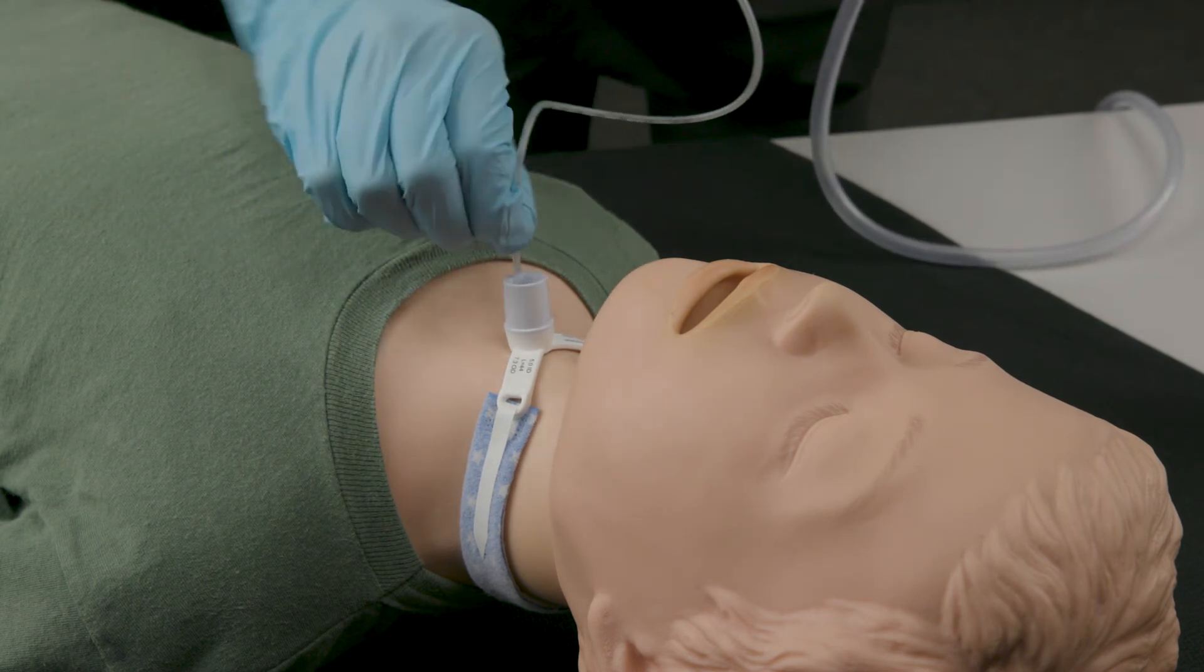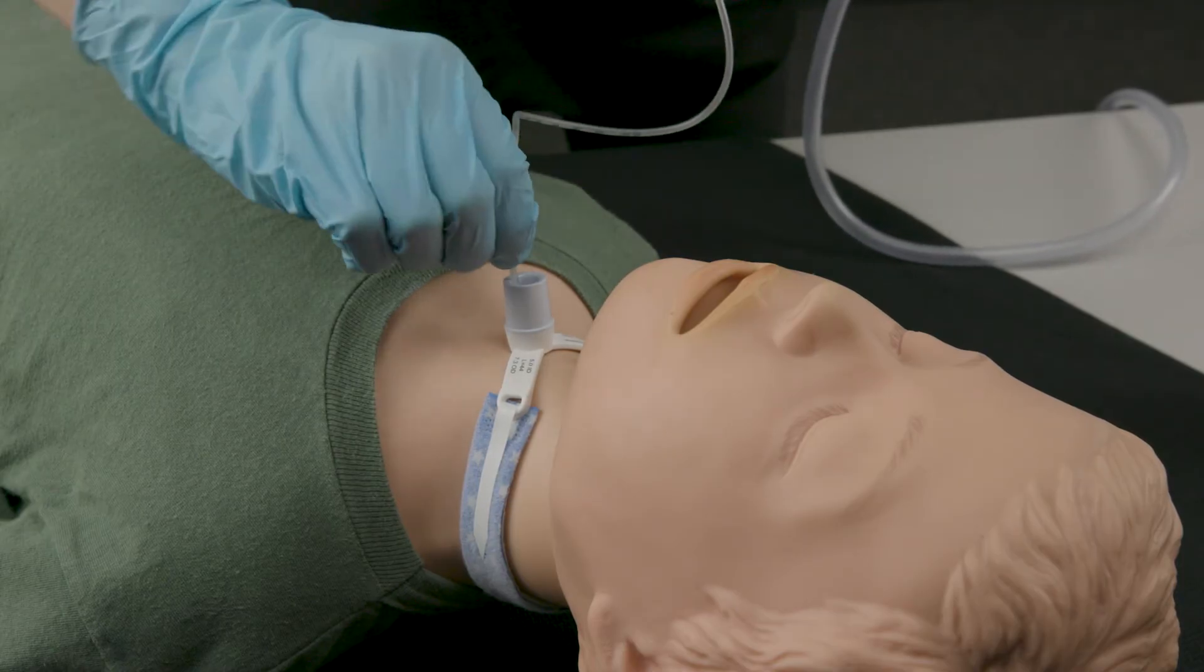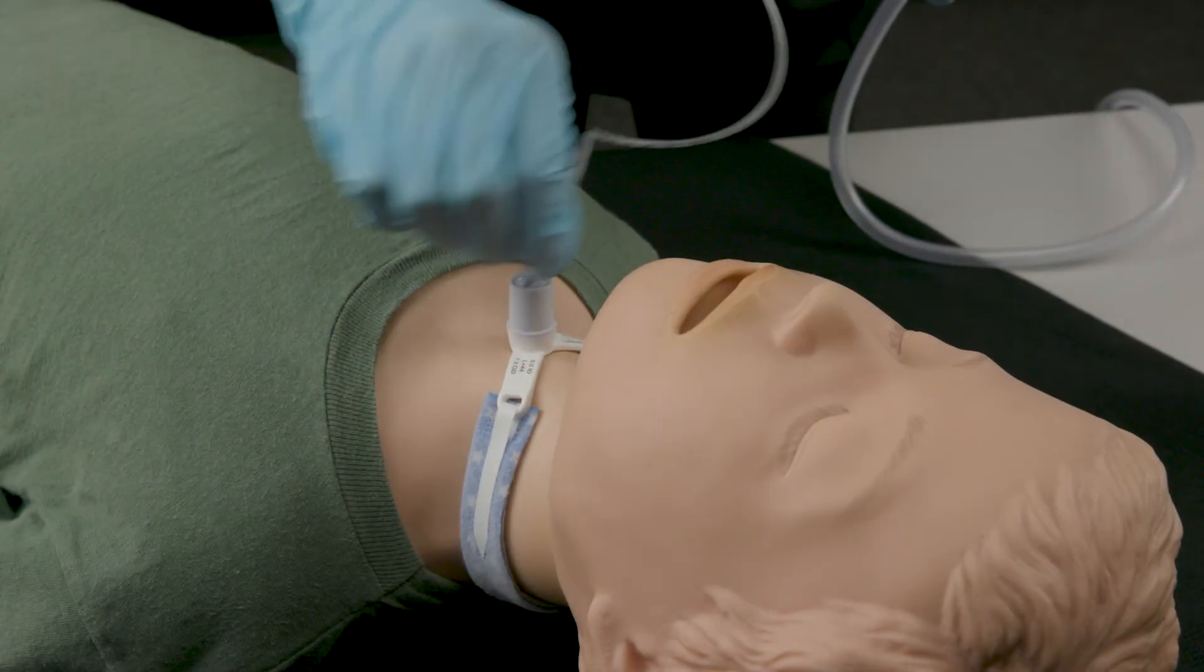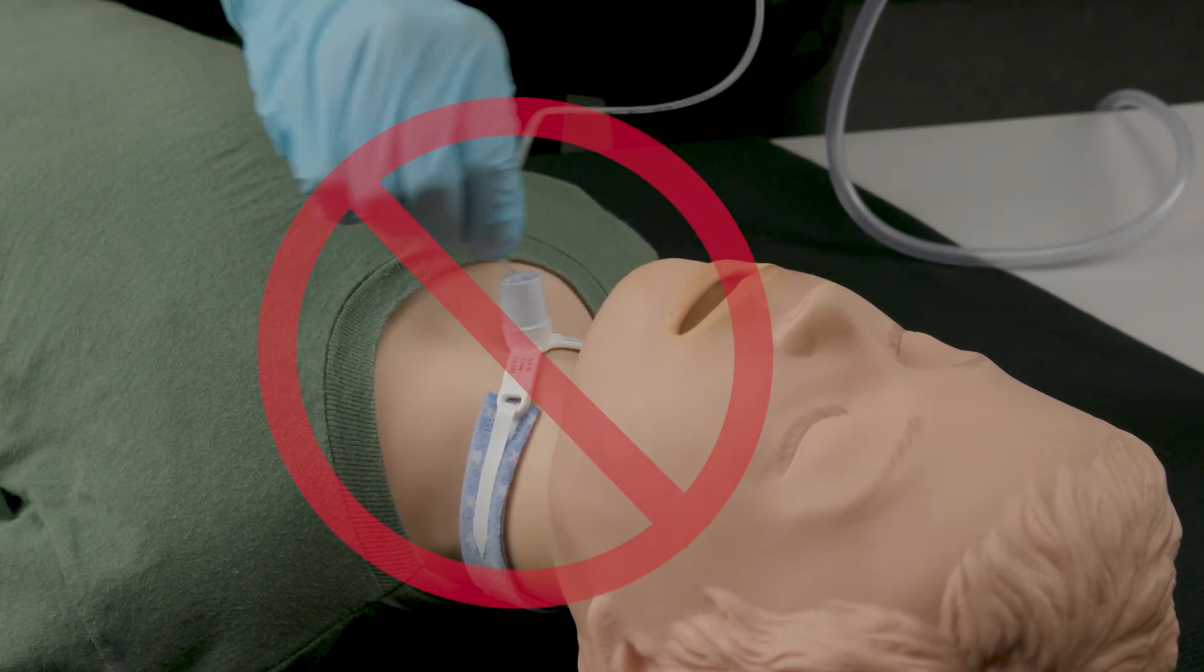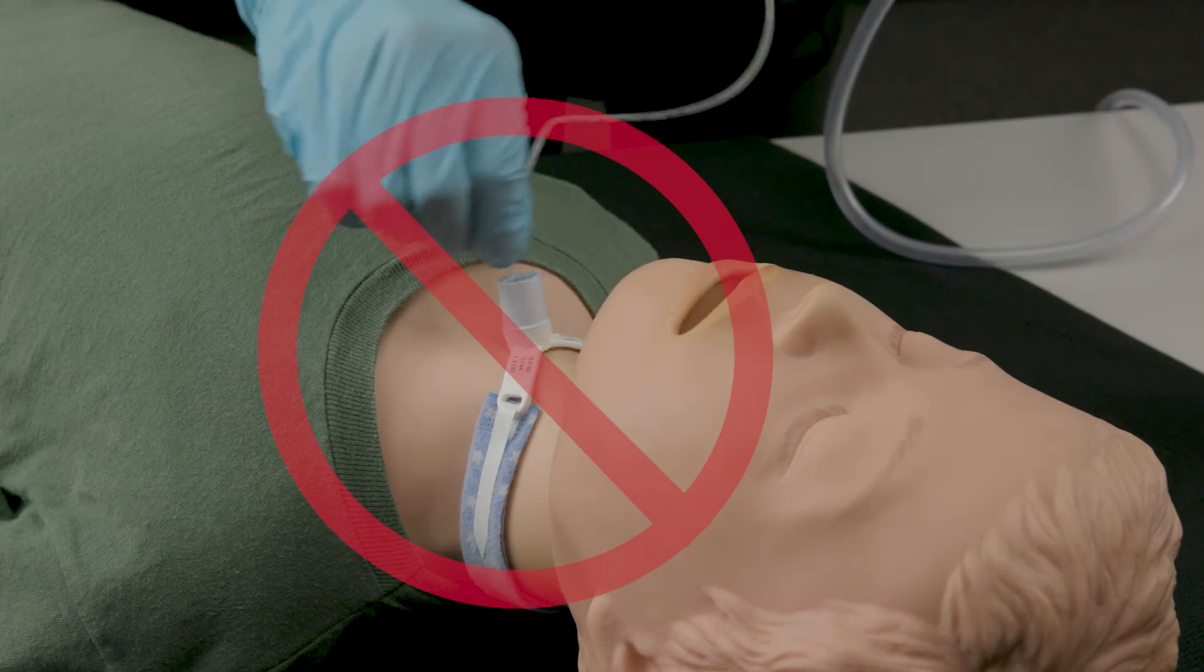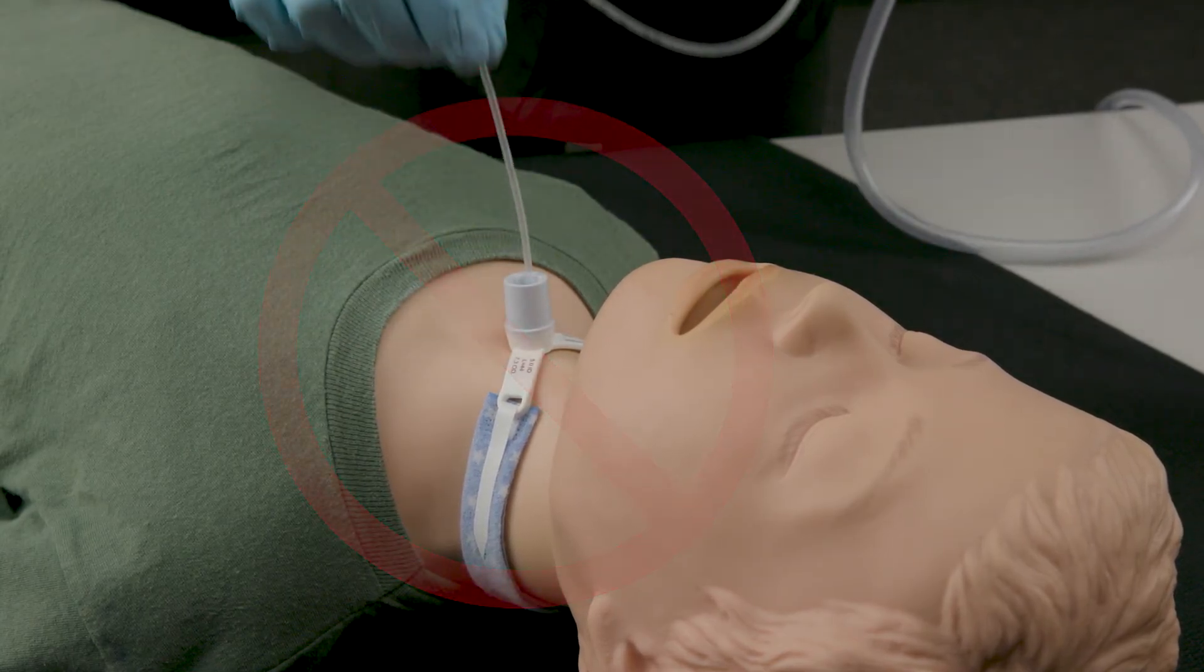If you cannot roll the catheter between your fingers, try rotating the catheter by turning your whole hand. This motion is similar to turning a doorknob. Do not stir the catheter by moving your hand in a circular motion. This method is not as effective as the rolling method and may cause trauma to the tissue.